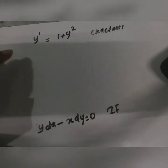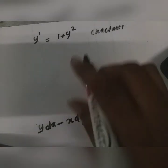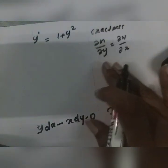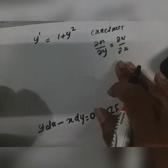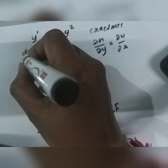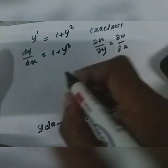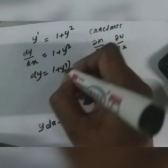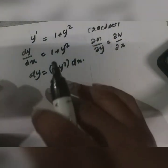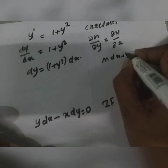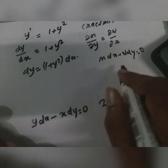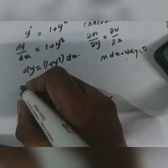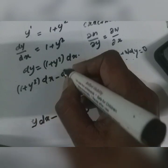Now the next question: y dash is equal to 1 plus y squared. We will check exactness. We use the condition: do M by do y equal to do N by do x. Rearranging y dash as dy by dx equal to 1 plus y squared, we get: 1 plus y squared dx minus dy equal to 0. So M equals 1 plus y squared and N equals minus 1.